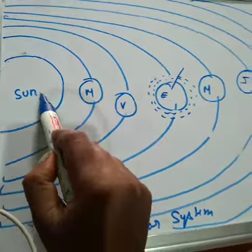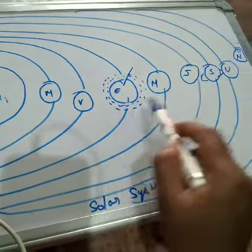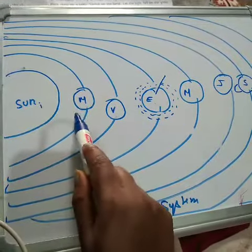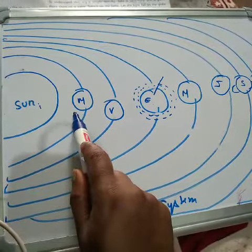After that we will find other seven planets. The closest to the Sun is Mercury. This is also one planet like Earth, it is called Mercury.